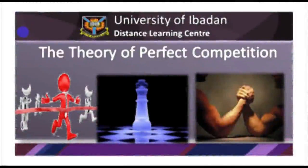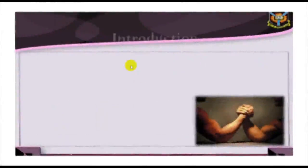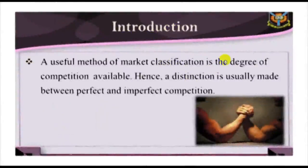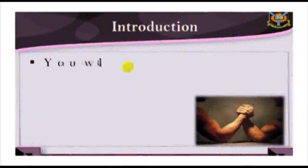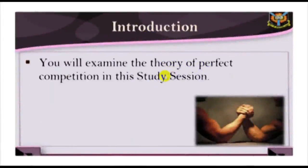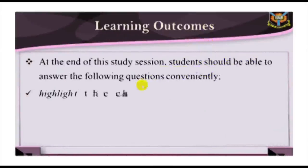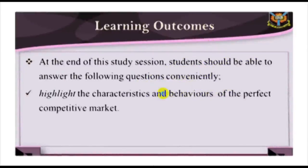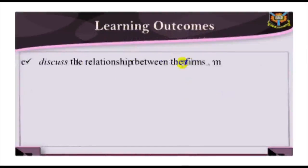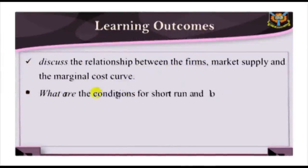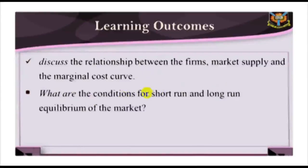ECO 201, Study Session 9: The Theory of Perfect Competition. Introduction. A useful method of market classification is the degree of competition available, and a distinction is usually made between perfect and imperfect competition. You will examine the theory of perfect market in this study session. When you have studied this session, you should be able to: one, identify the characteristics and behaviors of the perfectly competitive market; two, discuss the relationship between the firm's market supply and the marginal cost curve.